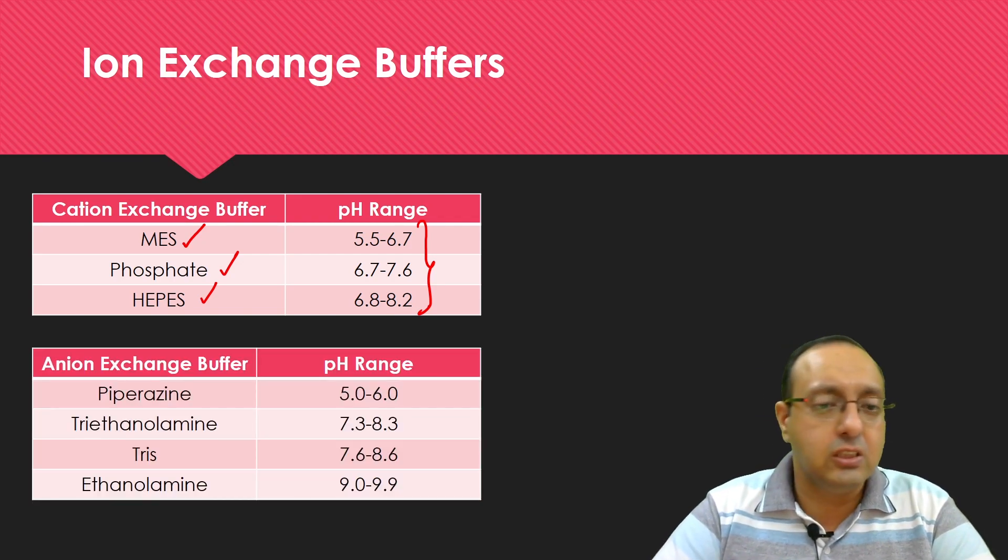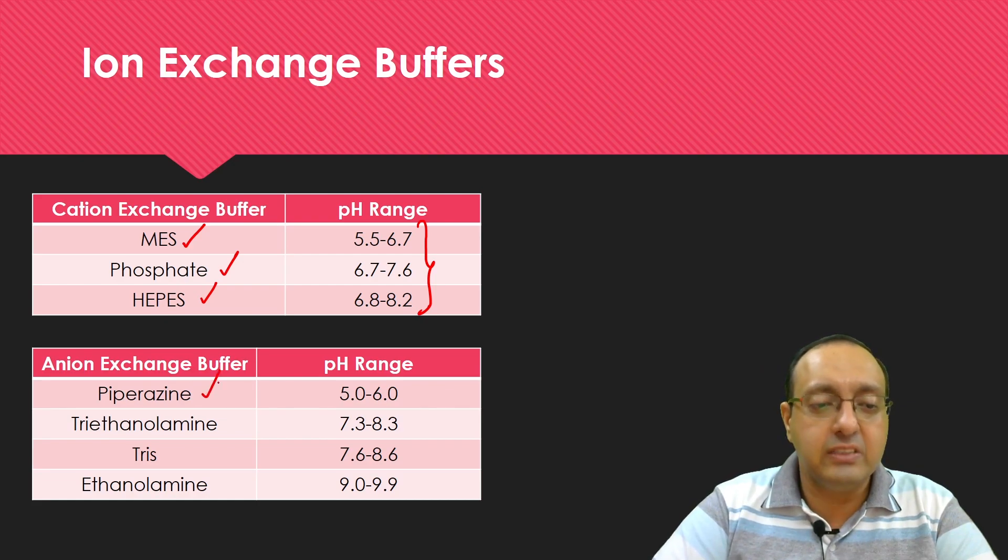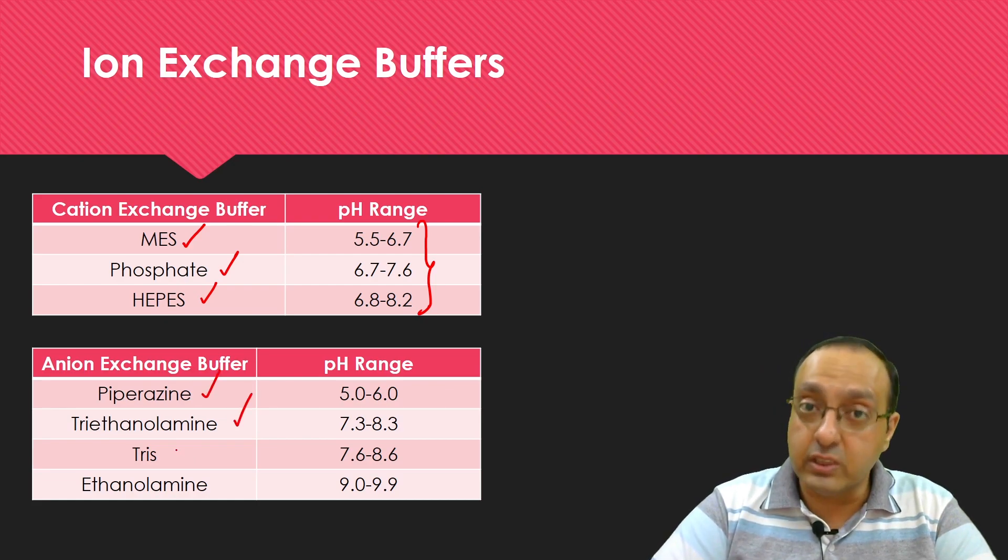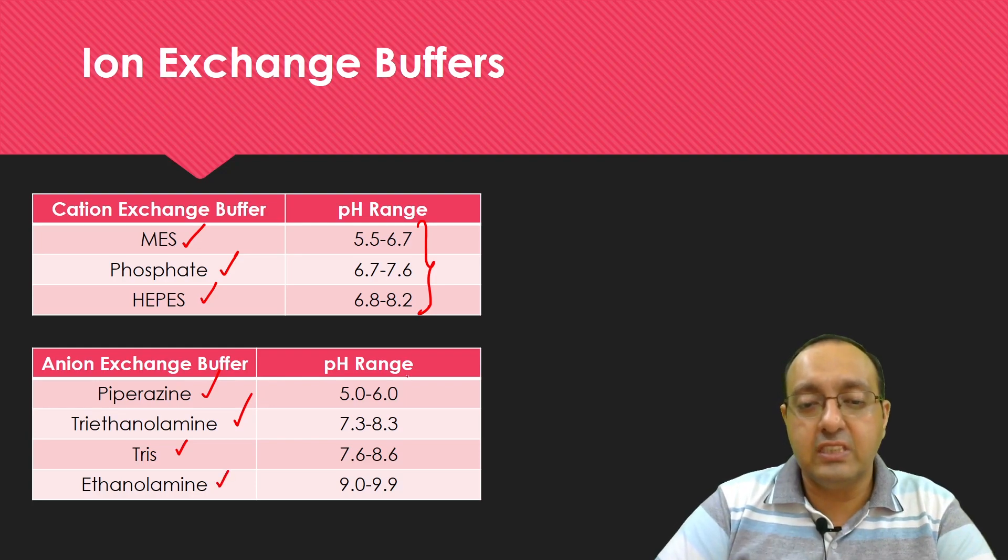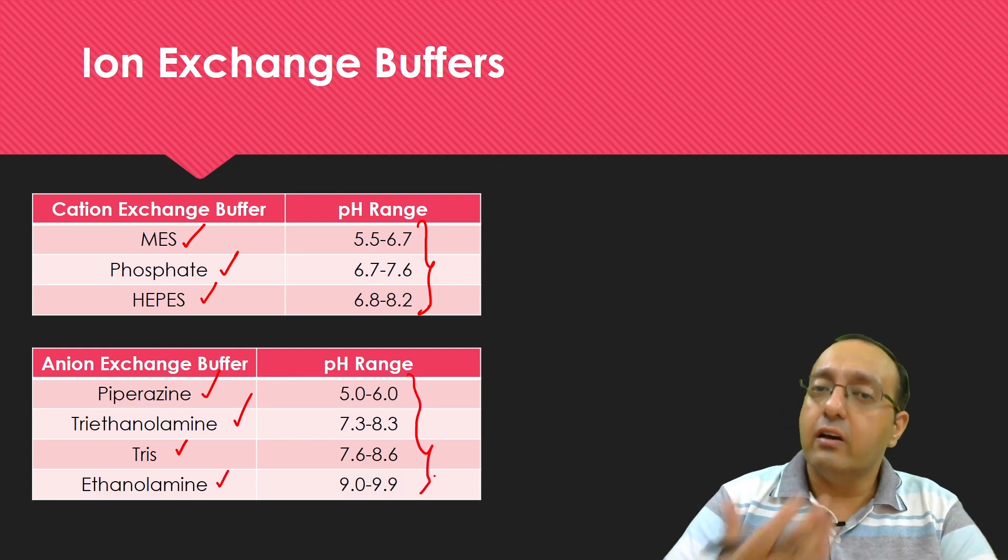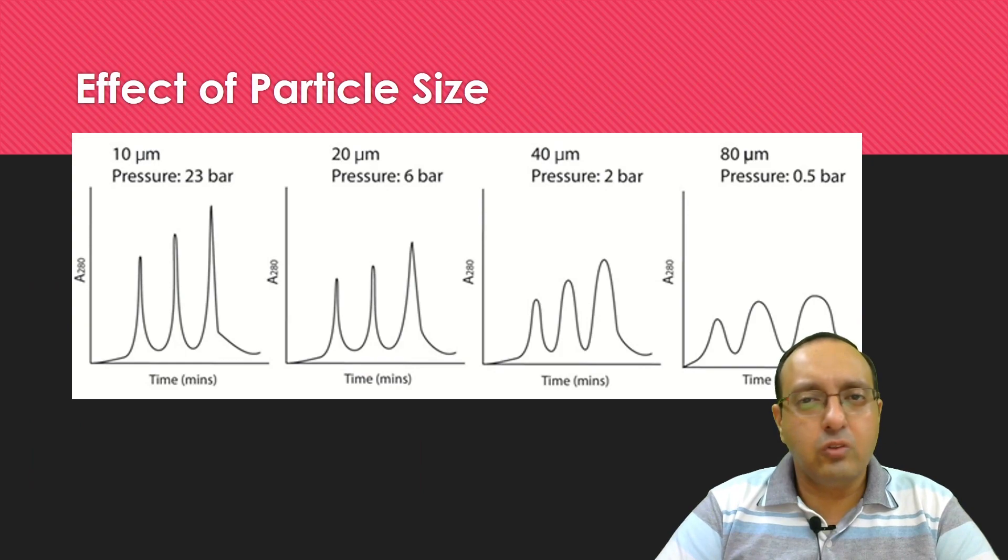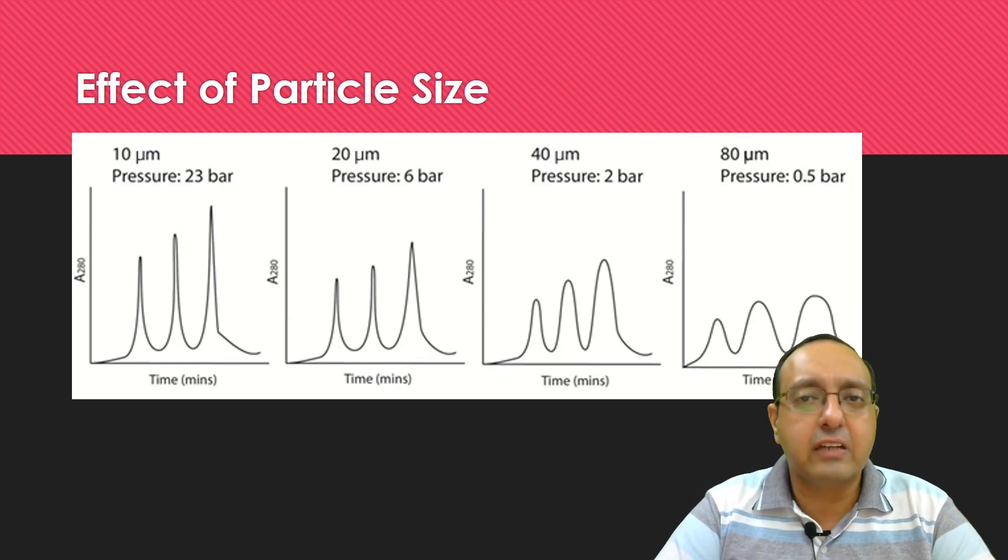Similarly for anion exchange we have buffers like piperazine, triethanolamine, Tris very commonly used buffer, and ethanolamine. You can see that they are active over a range of different pH values. There are a couple of factors which affect the protein resolution and the protein separation. One is the particle size.